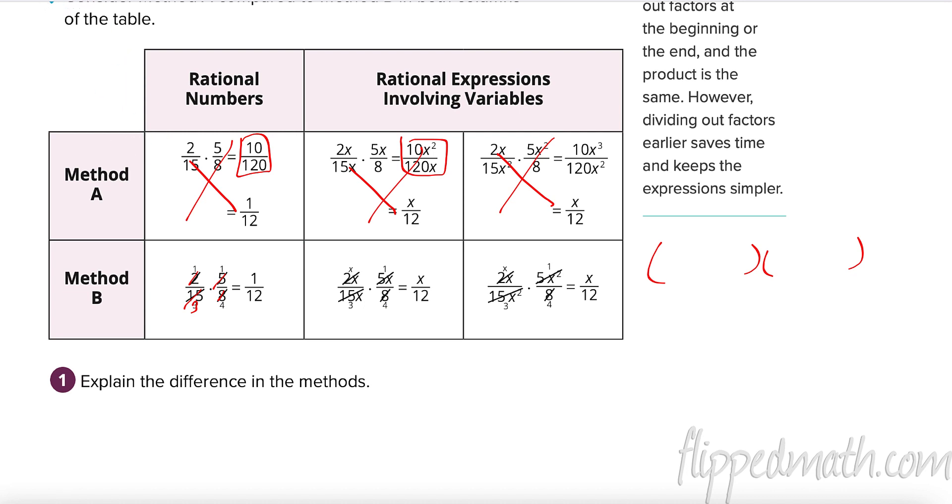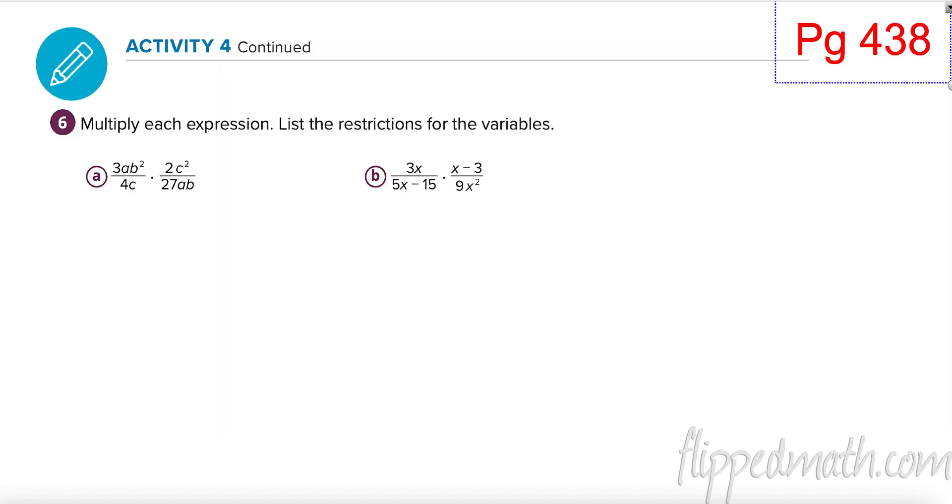I'm never going to stop someone from doing a different method if they like it. But sometimes you've got to make the wise decision. So here's what I like to do. I like you to understand that this essentially is two fractions, but really, it's just one. So I'm just going to write everything here. 3AB squared over 2C squared. It's all on top. On the bottom, I have 4C times 27AB. Everything is on the top. It doesn't matter. As long as I have a factor that is the same on top and bottom, I can cancel them. For example, this A and this A can cancel because they are the same.